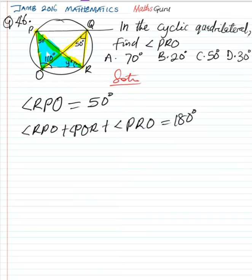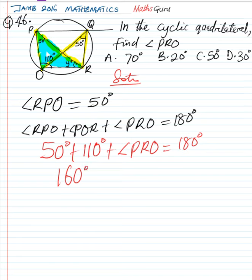So these angles are interior angles of this triangle. Let's have it RPO, that is the angle here, RPO is equal to 50 degrees plus angle POR. POR is known there, 110 degrees, plus angle PRO. That is what we are looking for, is equal to 180 degrees.